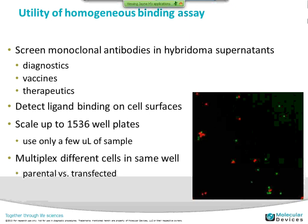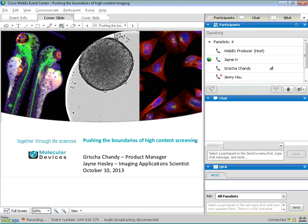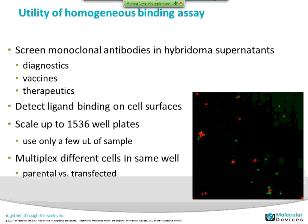The utility of the homogeneous binding assay is that you can screen monoclonal antibodies — especially from hybridoma supernatant — used for diagnostics, vaccines, or therapeutics. You can detect ligand binding on a cell surface and screen up to 1536-well plates. Whether it's 1536 or 384 well, you only need a few microliters of your sample and very low concentrations of your secondary antibody. The beauty is you can multiplex two different cells in the same well — for example, a parental cell versus a transfected cell expressing your receptor. We also showed an example of two different fluorophores on beads in the same well bound with secondary antibody in the FMAT format.